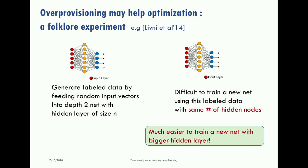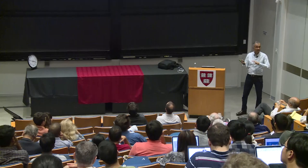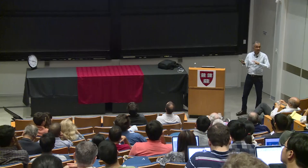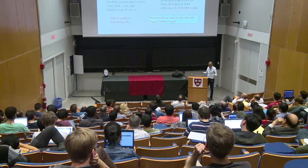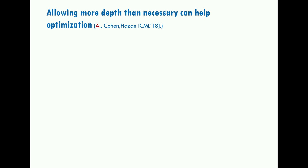This has been observed for several years but nobody has a theorem explaining it. The setup is mathematically clean — you know the teacher network exists with a given size — yet no one has proven why increasing the hidden layer size makes gradient descent converge so much faster. A recent paper attempts to understand why increasing depth can also help optimization.